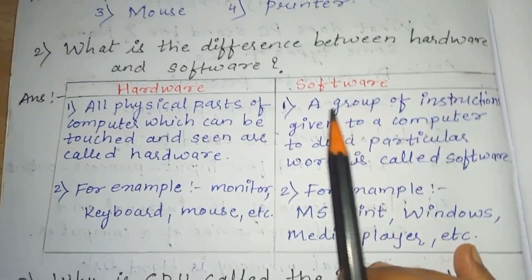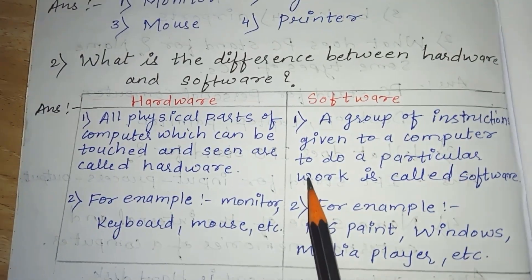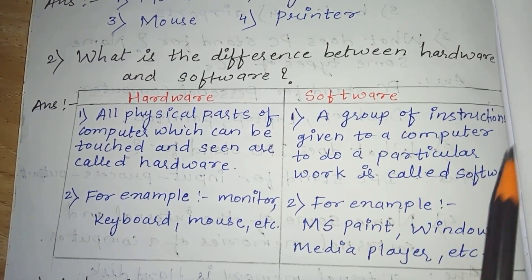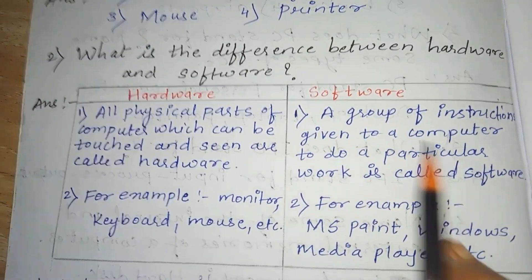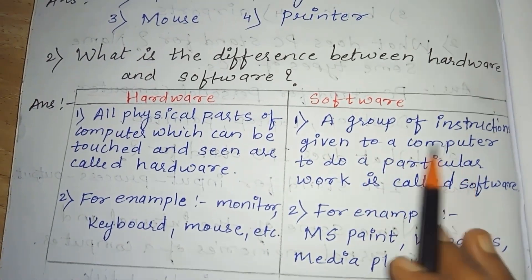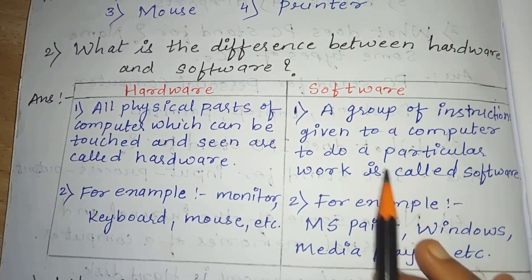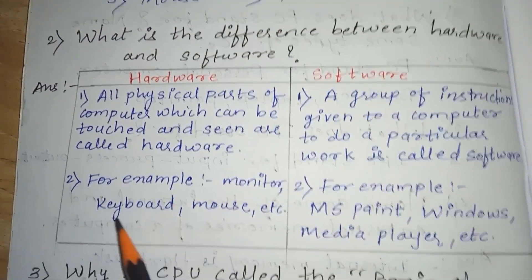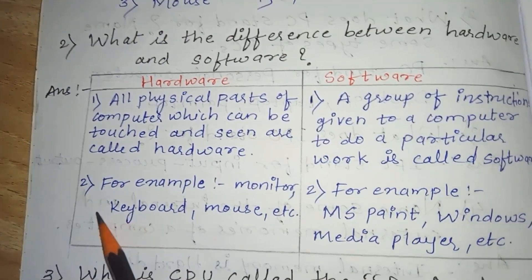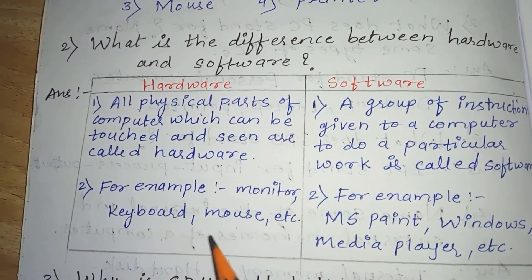Software: a group of instructions given to a computer to do a particular work is called software. For example, hardware includes monitor, keyboard, and mouse — these are things we can physically touch.